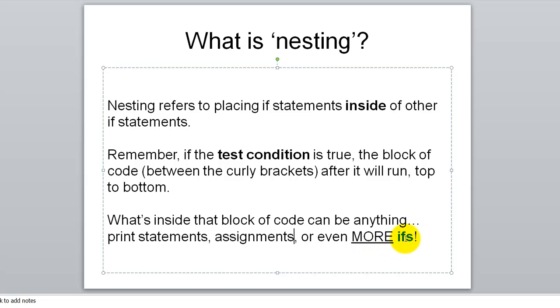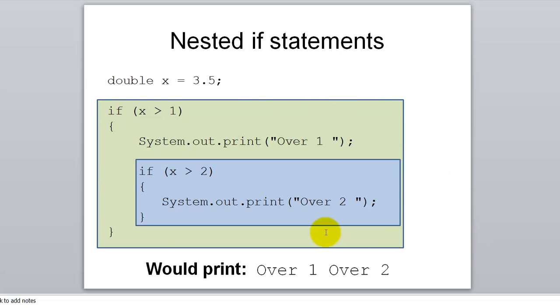And so whenever you put an if statement inside of the curly brackets of an if statement, then you are nesting them. Here's an example. Our green block shows the first or outermost if statement. If x is greater than one, then we're going to do some stuff. And inside of that stuff that we're doing, we have a print statement, but we also have another if statement. This if statement is nested inside of this if statement. So the only way we even consider if we should run this statement is if this one was true. So in order for this to print over 2, it has to get through two different test conditions. It has to get through this one, then it has to get through this one.